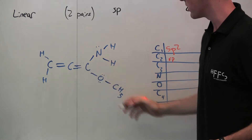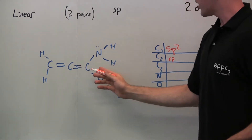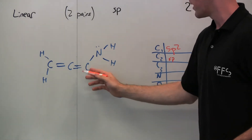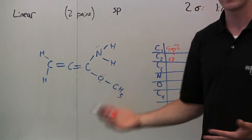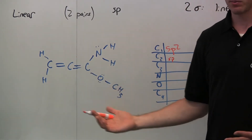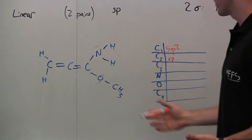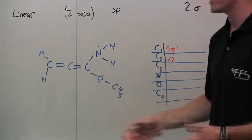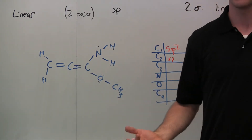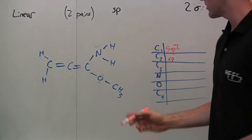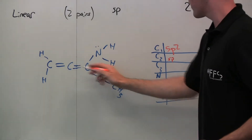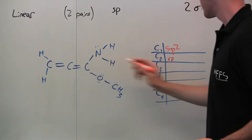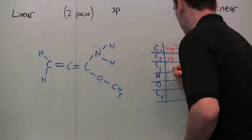This third carbon is also part of this double bond, so one sigma bond is part of the VSEPR pair there, and then it has two other sigma bonds and no localized non-binding electrons. So again, like carbon 1, this is SP2.